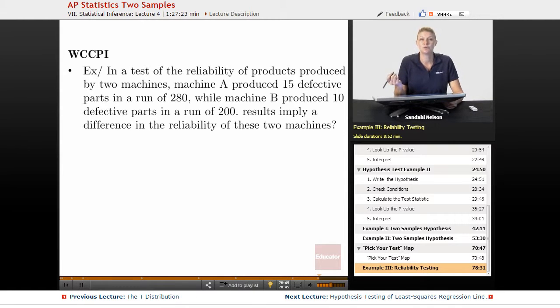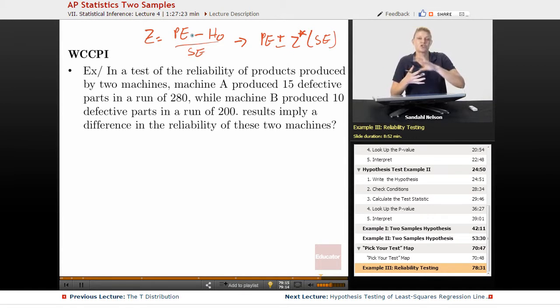We already know how to deal with two-sample hypothesis tests for proportions and for means, but a confidence interval is going to be almost the same thing, except that instead of having z equals point estimate minus the null hypothesis over the standard error, it's just going to be the point estimate plus or minus your z or your t, so we'll call it z star, times the standard error. So if you know the pieces, you just shift them around and you have to look up your z star or your t star. And that should not be a problem, you did a lot of practice on that in the last few lectures.